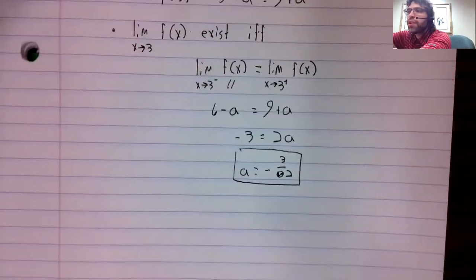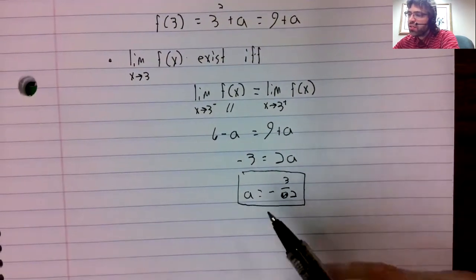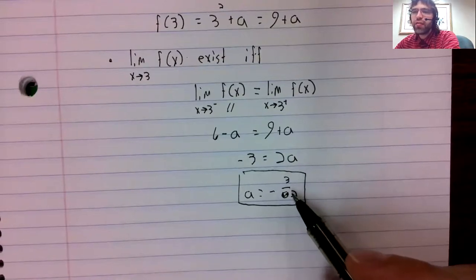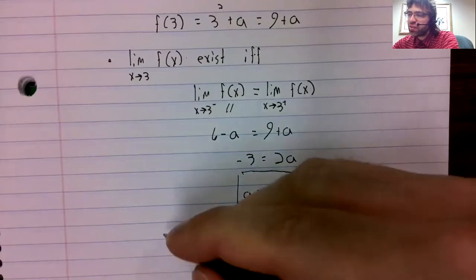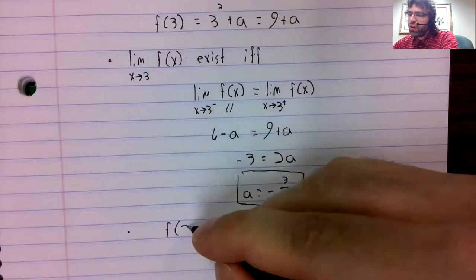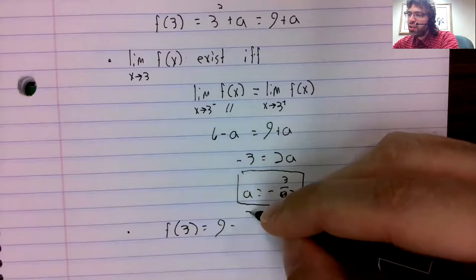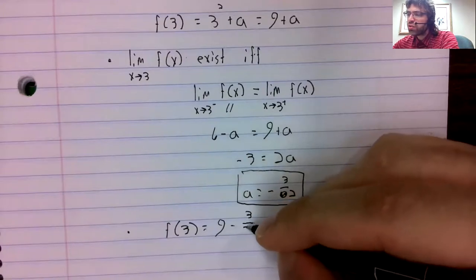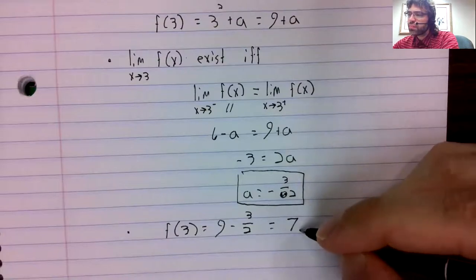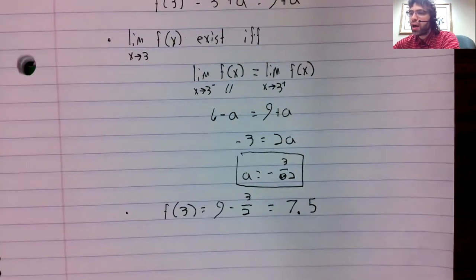We have one more condition. So let's say that A does equal negative three halves. Then f of three is nine minus three halves, so 7.5.